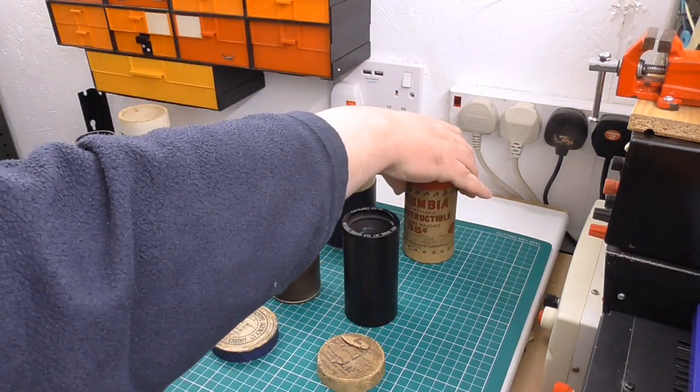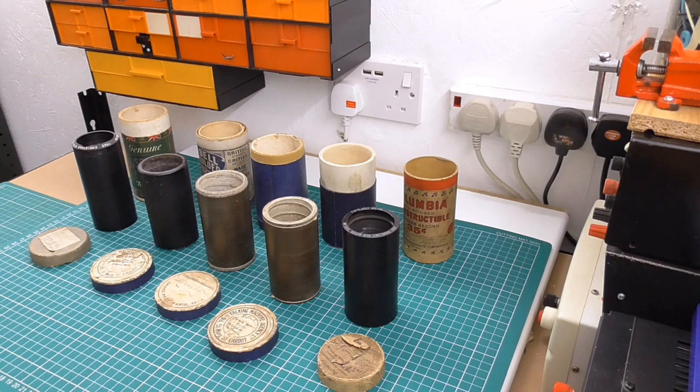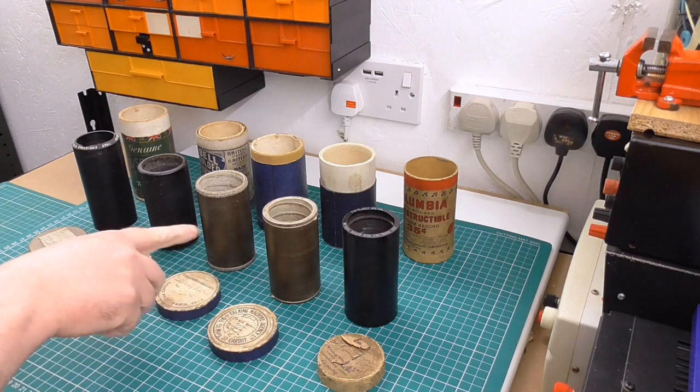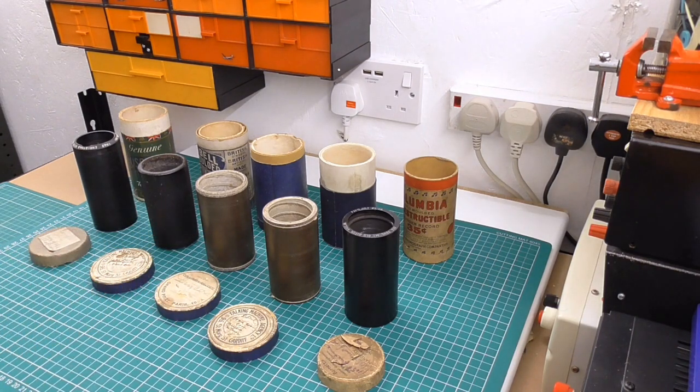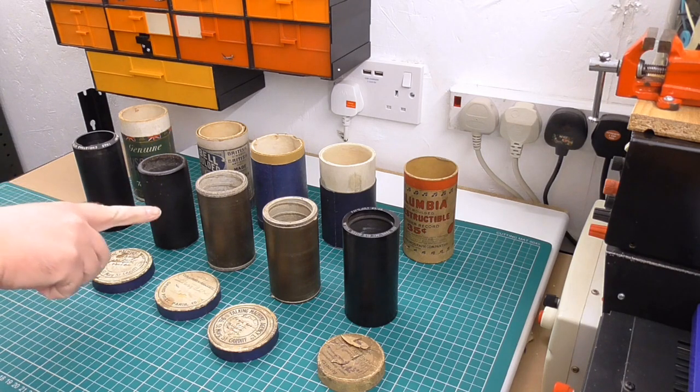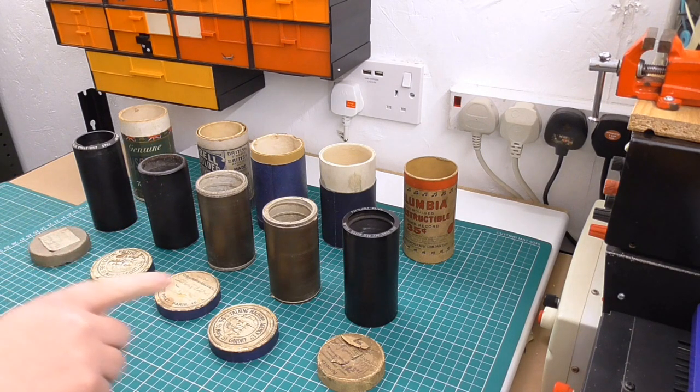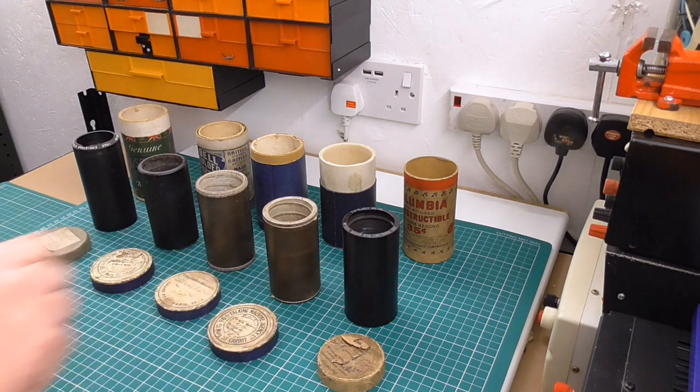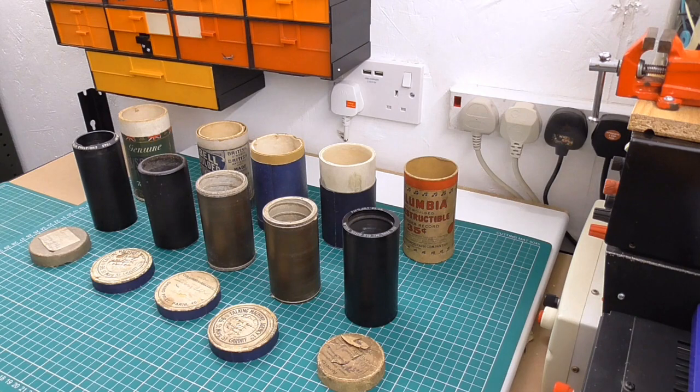You can see there's some variation. Some are black, some are brown. I think these two here are the sort of oldest - brown wax cylinders. I'm not sure what the rest is made out of. I think these might be wax but later black wax. This one might even be celluloid or something like that.